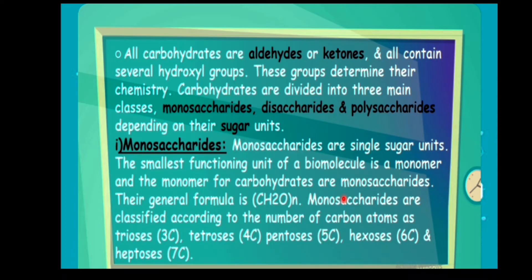The monosaccharide formula is CH2O, where only the numbers vary. For example, C2H4O2. Monosaccharides are classified according to the number of carbon atoms: triose, tetrose, pentose, hexose, and heptose.